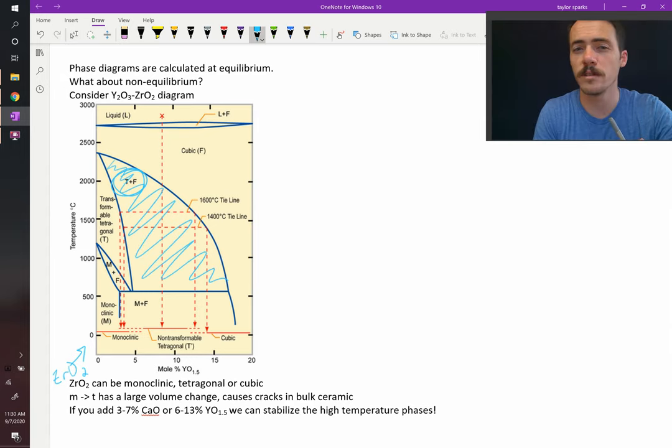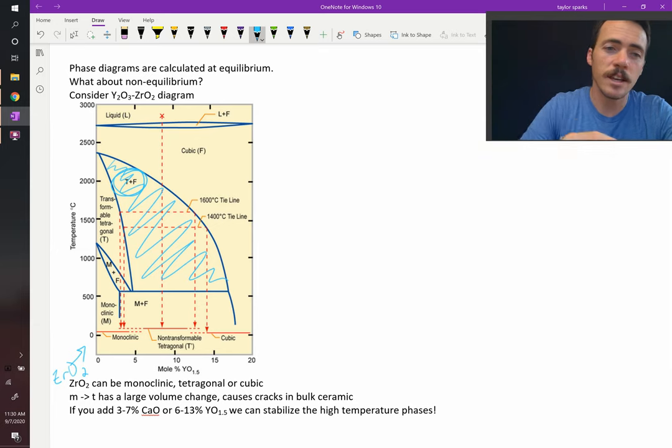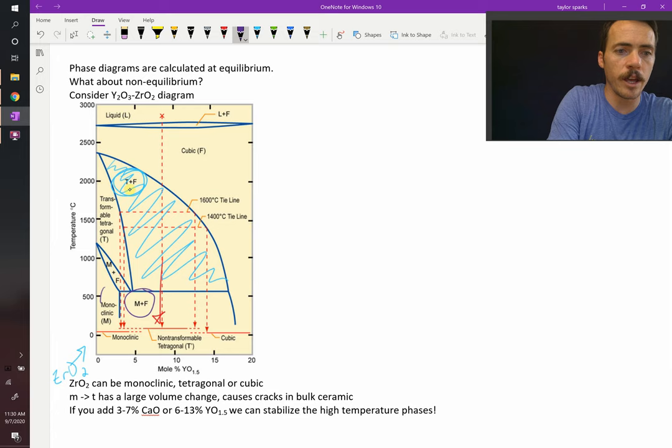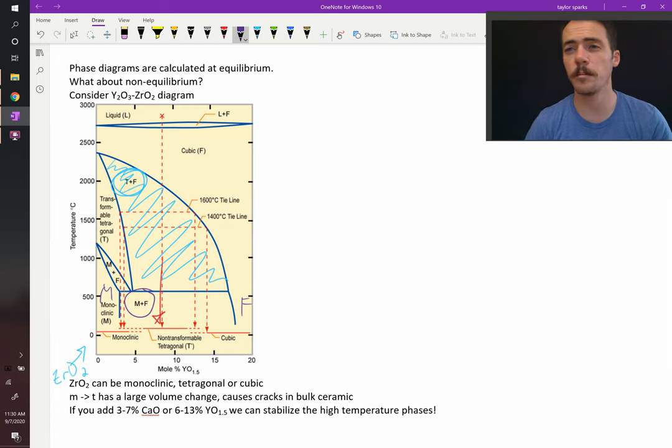What can happen is that if you put it in this region where there's a mixture of T plus F, and then you cool it down, thermodynamics tells us that it wants to turn into M plus F. Because now you've got M over here, and you've got the F phase over here. So it should be a mixture of M plus F.